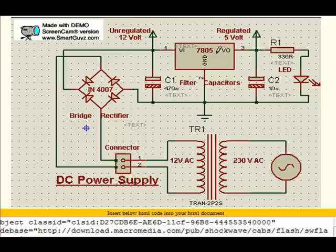So here we get regulated 5 volt, meaning if this voltage at the input changes from 9, 10, 11, 12, 13, 14 whatever may be, this voltage remains constant at 5 volt.